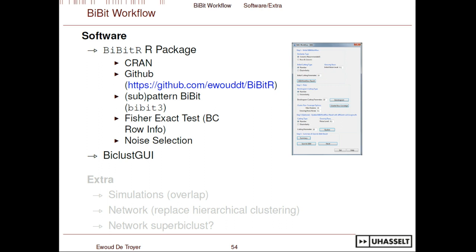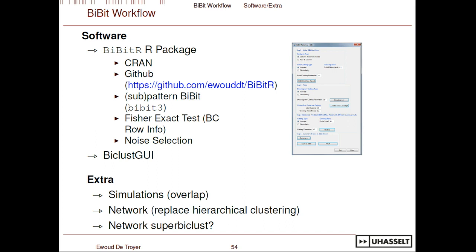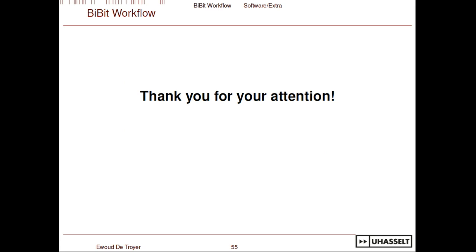All of this is implemented in the bbitr package, which also includes extra features like pattern-guided BBit and more information about rows via the Fisher Exact test. The main workflow functionality is also included in the ByteLessQui package, an augmenter plugin for all different kinds of bi-clustering algorithms. Simulations showed it was doing fairly well at finding overlapping bi-clusters. Future work includes potentially replacing the hierarchical clustering step with a network analysis to see how well that performs in combination with the workflow.